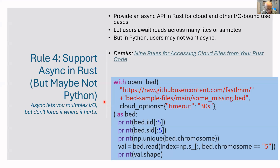Rule four is the async question. We always want to know whether to support async for long processes like reading from a cloud file. My recommendation is to support async in Rust for processes that might be slow, like a read. On Python, I decided not to provide async support — when a Python user does a read, it calls Rust async code, but that code just waits until the read completes, so from the Python user's point of view they don't have to worry about async. There's an article: Nine Rules for Accessing Cloud Files from your Rust code.